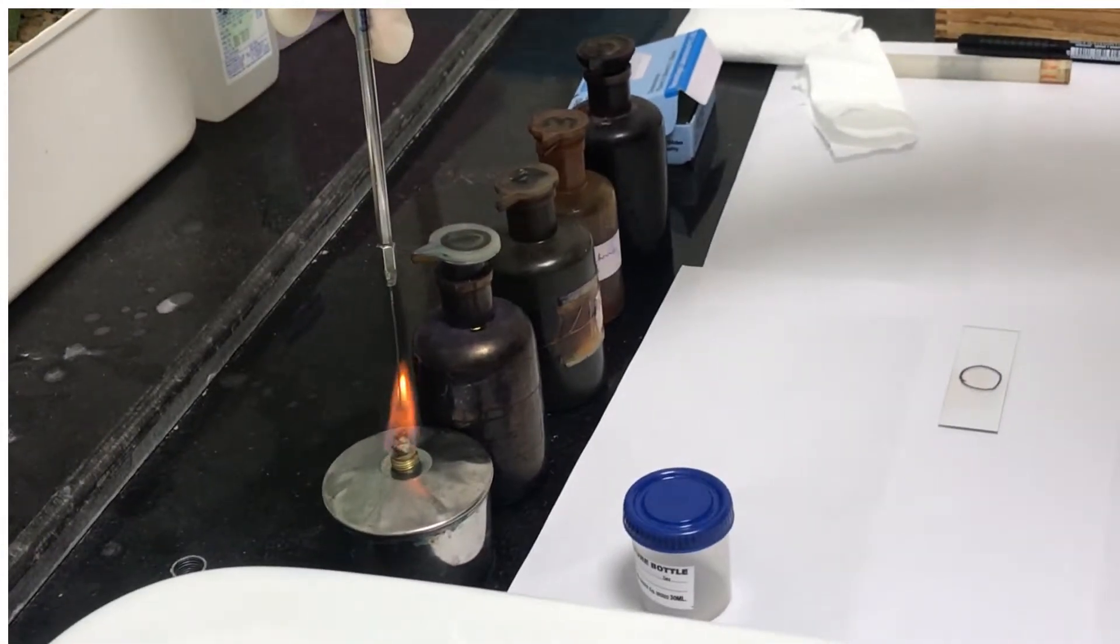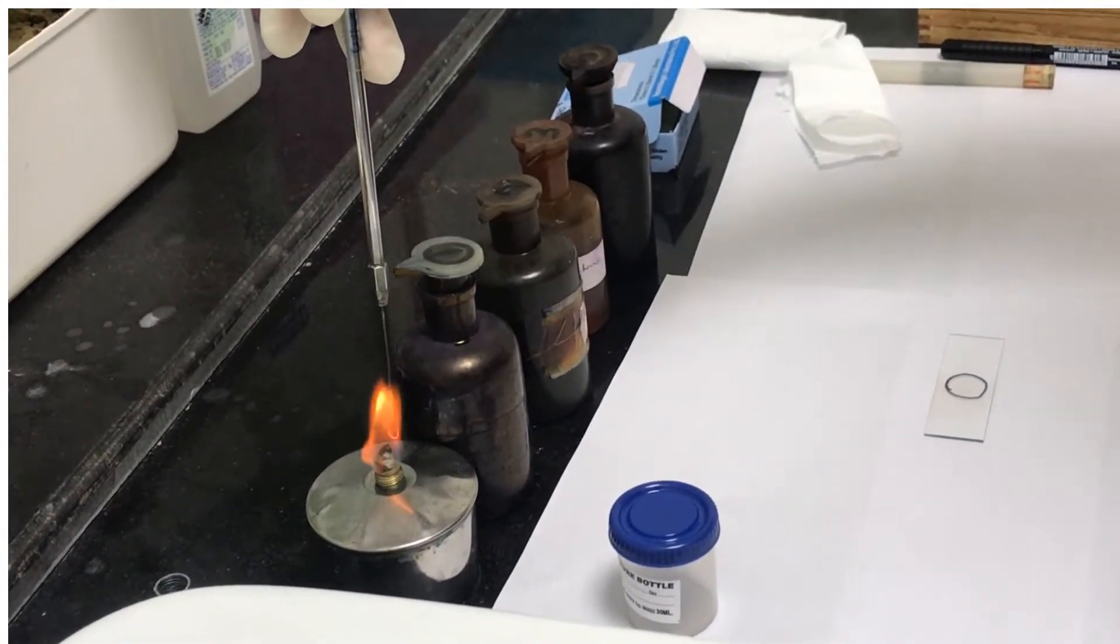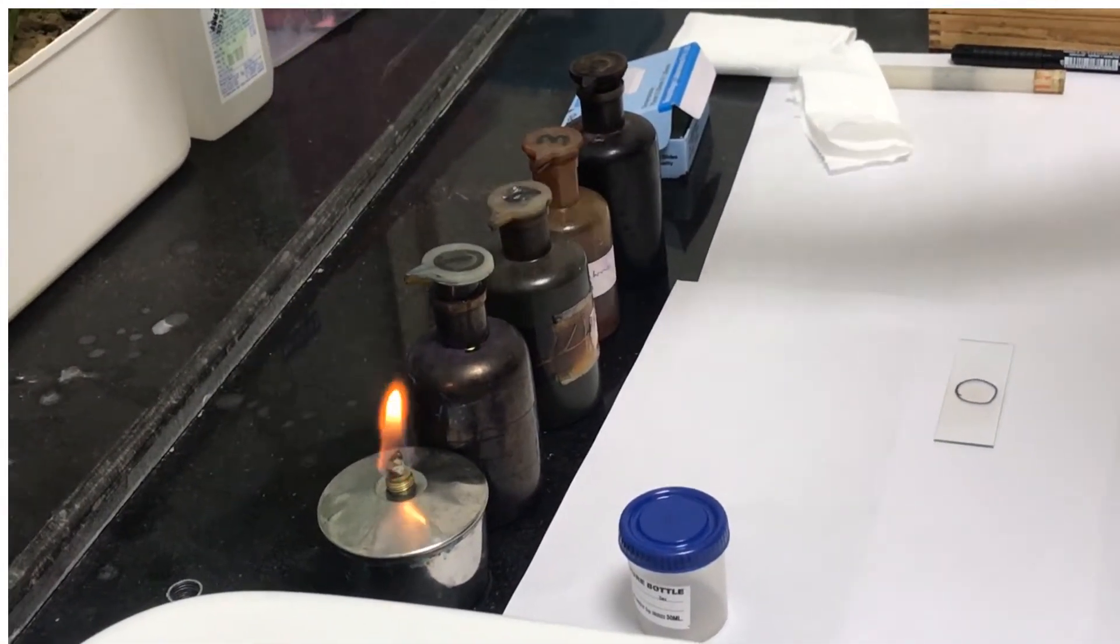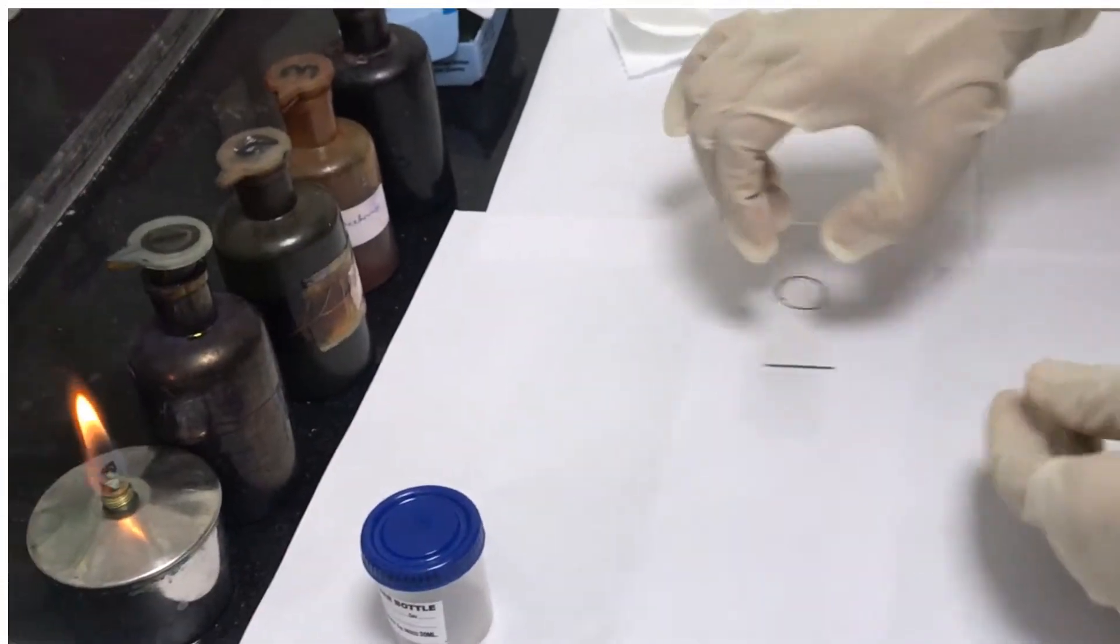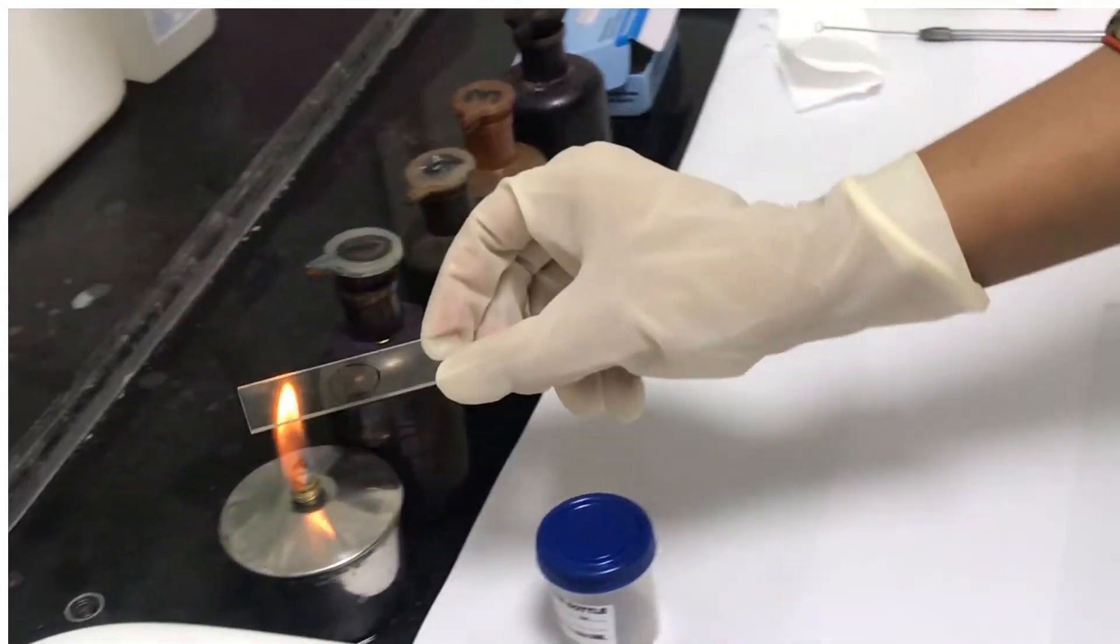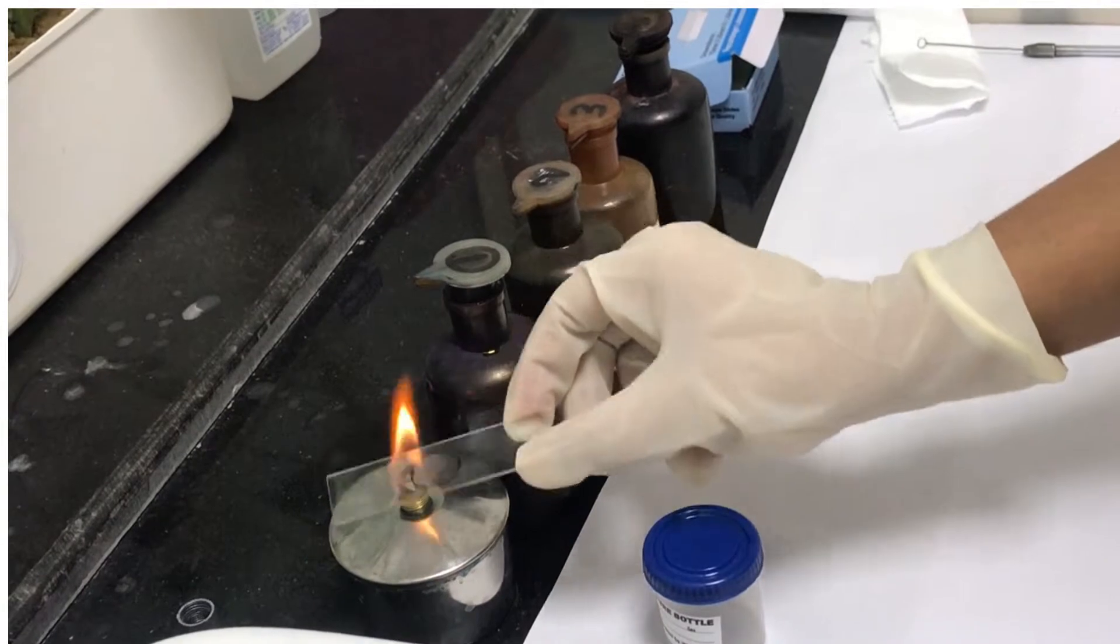Sterilize the inoculating loop again, meanwhile allow the smear to air dry. After the smear is air dried, hold the slide at one end and pass it through the Bunsen flame with smear side up. Do this two to three times.